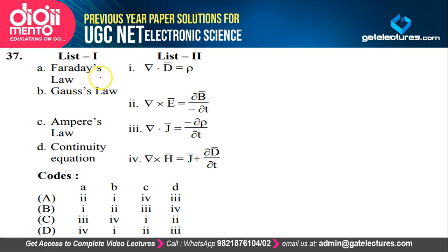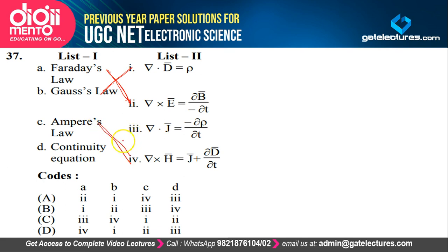The next question is from electromagnetics — they are asking about four laws. Faraday's law: del cross E equals minus del B by del T. Gauss law says del dot D equals charge density, representing charge density. Ampere's law is del cross H equals J plus del D by del T. The continuity equation is the fourth statement. So A matches to 2, B to 1, C to 4, D to 3, which is option A. Easy question just asking basics of electromagnetics.